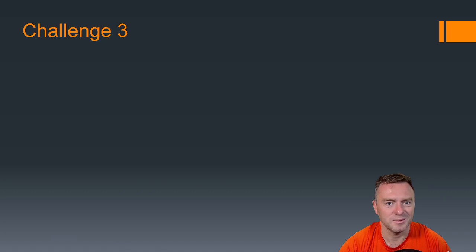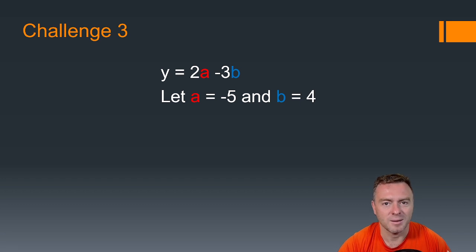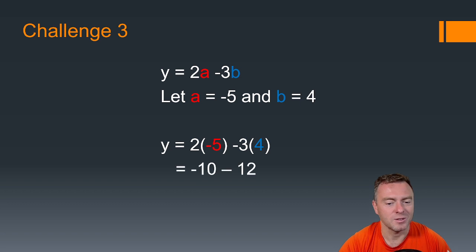And then another substitution practice one. So we're just going to keep practicing these. We've got 2 times a minus 3 times b. So we've got, let a = -5, b = 4. Pause the video, have a go. So what you should have found is you've got 2 times -5 minus 3 times 4, so you've got -10 - 12, which gives you -22.